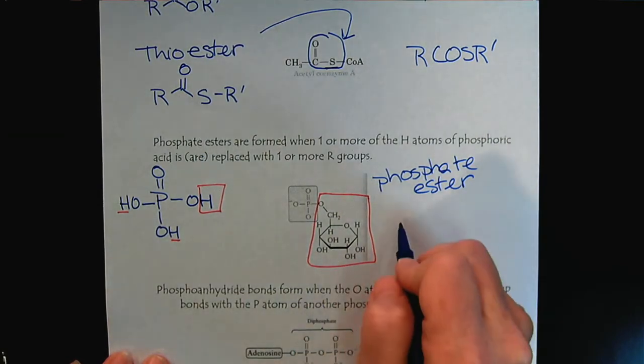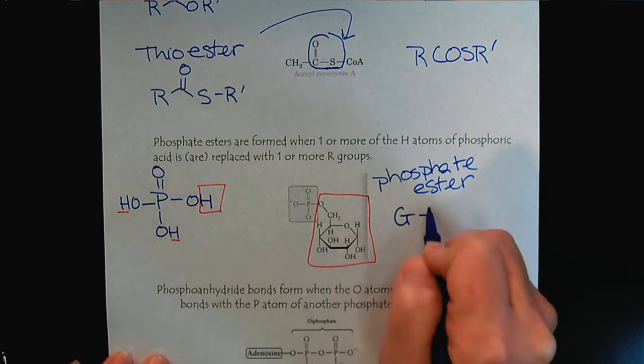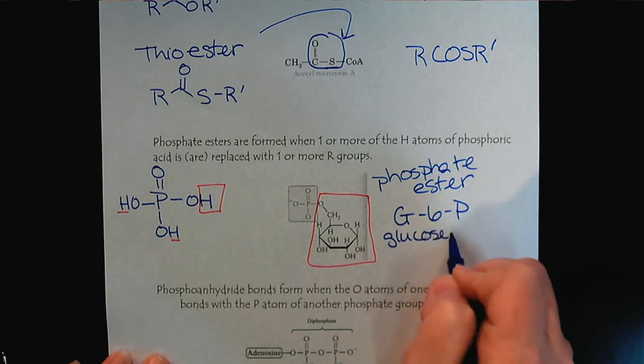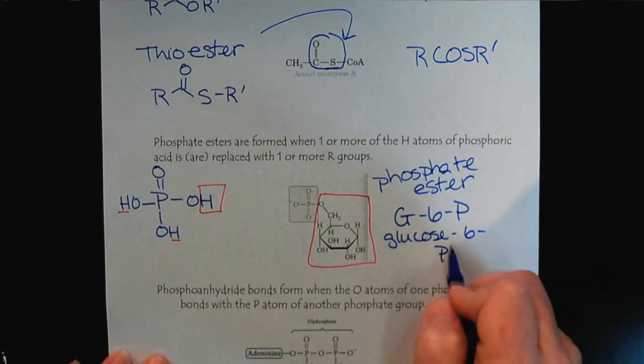we would describe, we could say this is G6P for glucose 6-phosphate.